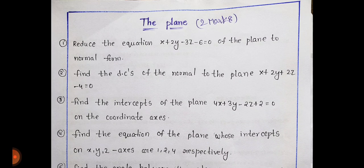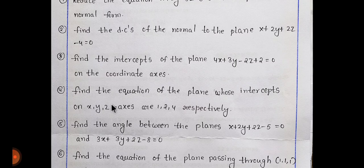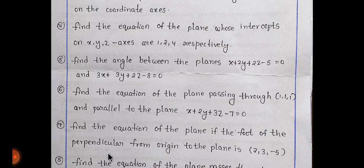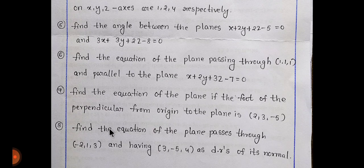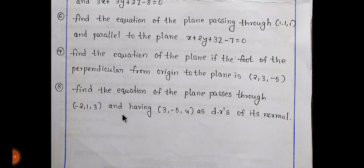The plane. Reduce the equation into normal form. Normal form is direction cosine. Find the intercept form - equation of the plane intercept form. Angle between the planes. Equation of the plane - find the equation passing through direction ratio. 8 of change.